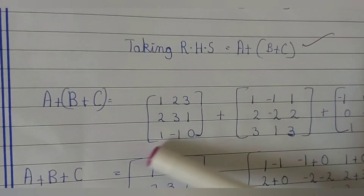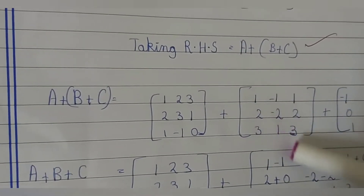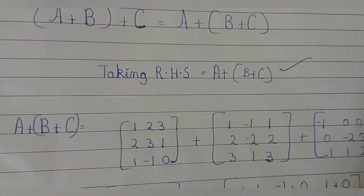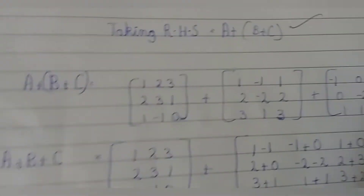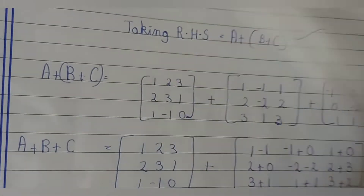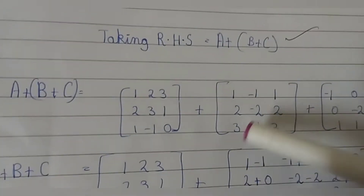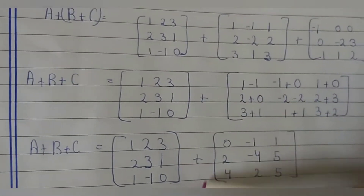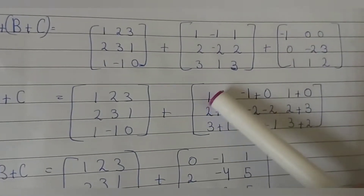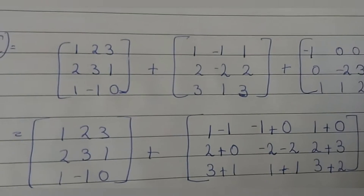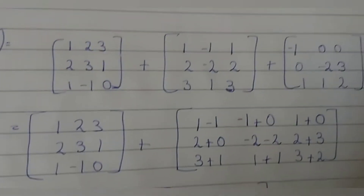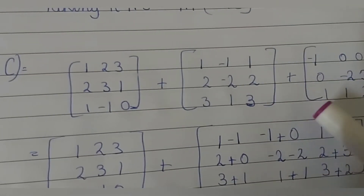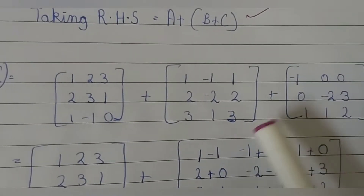We have a value: 1, 2, 3, 2, 3, 1, 1, minus 1, 0. B value: 1, minus 1, 1, 2, minus 2, 2, 3, 1, 3. C value: minus 1, 0, 0, 0, minus 2, 3, 1, 1, 2. First we solve the bracket b plus c: 1 plus minus 1 equals 0, minus 1 plus 0 equals minus 1, 1 plus 0 equals 1, 2 plus 0 equals 2, minus 2 plus minus 2 equals minus 4, 2 plus 3 equals 5, 3 plus 1 equals 4, 1 plus 1 equals 2, 3 plus 2 equals 5.